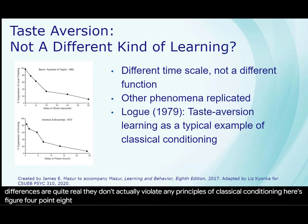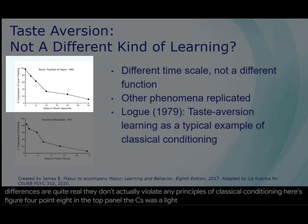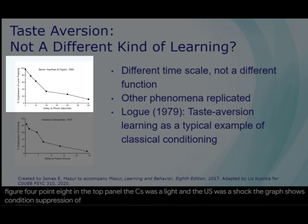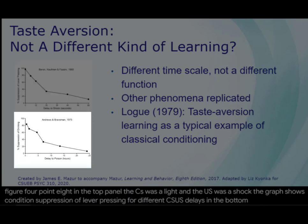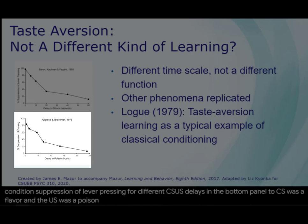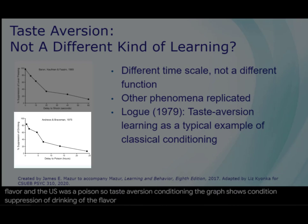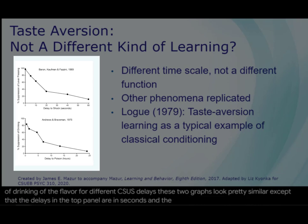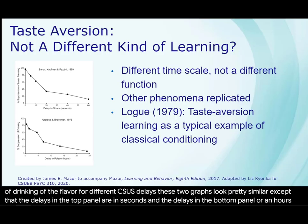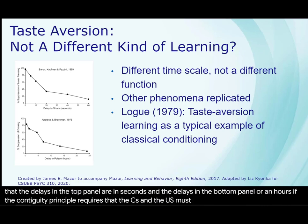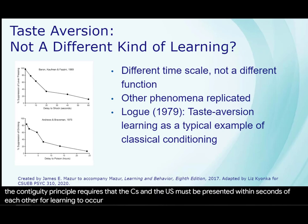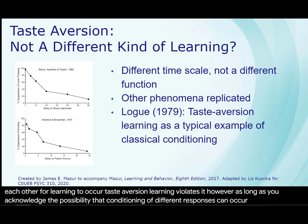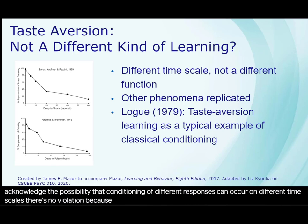Here's Figure 4.8. In the top panel, the CS was a light and the US was a shock. The graph shows conditioned suppression of lever pressing for different CS-US delays. In the bottom panel, the CS was a flavor and the US was a poison — taste aversion conditioning. The graph shows conditioned suppression of drinking of the flavor for different CS-US delays. These two graphs look pretty similar, except that the delays in the top panel are in seconds and the delays in the bottom panel are in hours. If the contiguity principle requires that the CS and US must be presented within seconds for learning to occur, taste aversion learning violates it. However, as long as you acknowledge that conditioning of different responses can occur on different timescales, there's no violation because the process is the same.